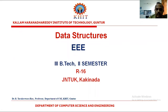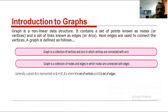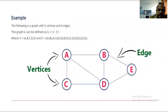Good morning, dear students. So we are now discussing graphs. A graph is a collection of vertices and arcs, or a collection of nodes and edges. Yesterday we discussed graph and graph terminologies. Here is an example graph with five vertices and seven edges.